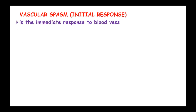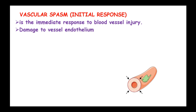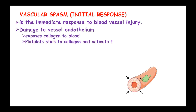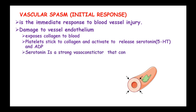Vascular spasm is the initial response, and it refers to the immediate response to blood vessel injury. Damage to the vessel endothelium exposes collagen to the blood, and platelets stick to collagen and activate the release of serotonin and adenosine diphosphate. Serotonin is known to be a strong vasoconstrictor, and therefore constricts blood vessels, reducing flow to the injured area.